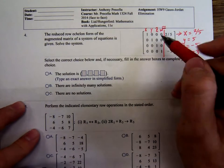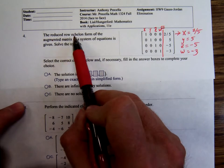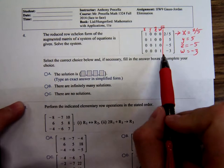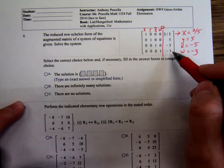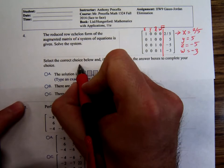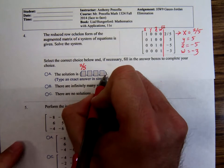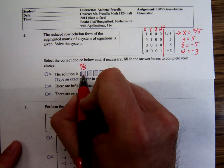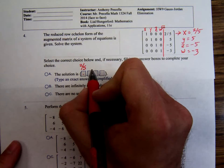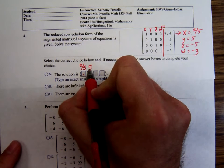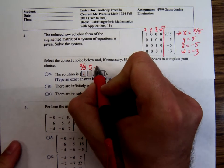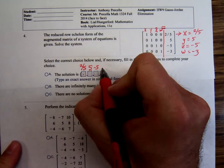If you have written this reduced row echelon form, then the solution is staring you in the face. x is 2 fifths. Notice, they don't specify variables. They're just going to list them out. You list it out: 2 fifths, comma, here you'd write a 5, then a negative 5, and a negative 3.